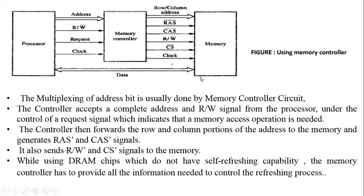After the decoding operation fixes a particular row and column, the requested operation is performed. The memory controller also forwards the received command — whether it is a read or write command — to the memory block.